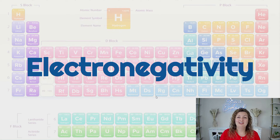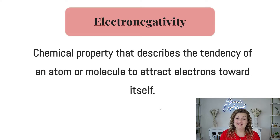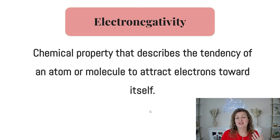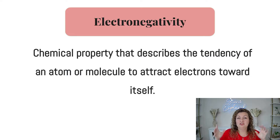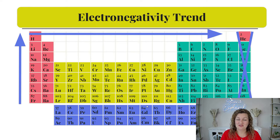Hey everybody, this is Vodashan here. Today we're talking about electronegativity. So what exactly is that? It's a chemical property that describes the tendency of an atom or molecule to attract electrons towards itself. You can think of this as how much desire does the atom or molecule have to attract an electron to its valence shell.